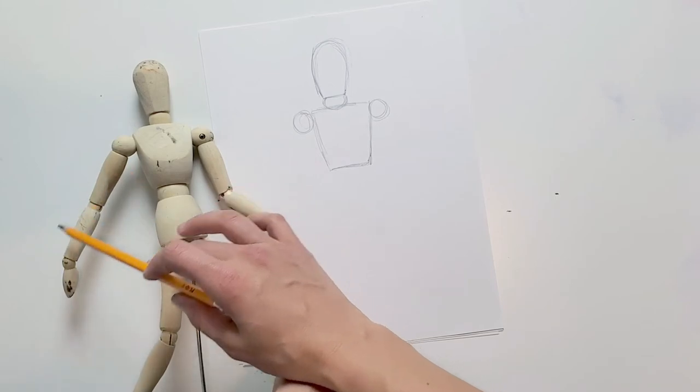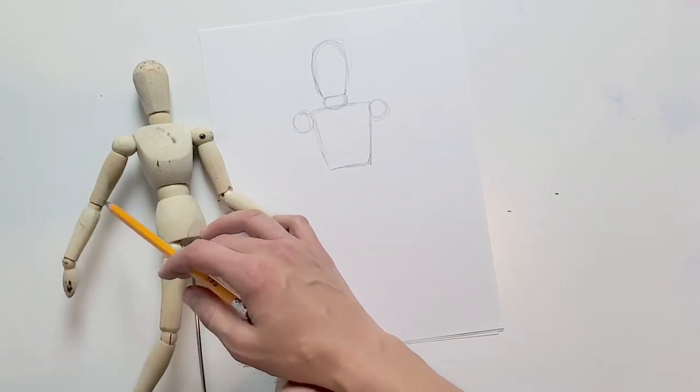The bicep, the forearm, both to me look kind of like rectangles.